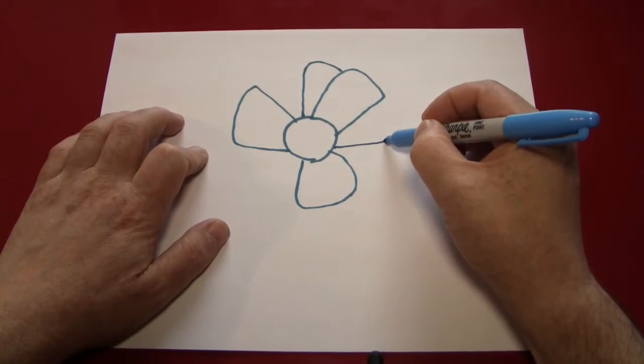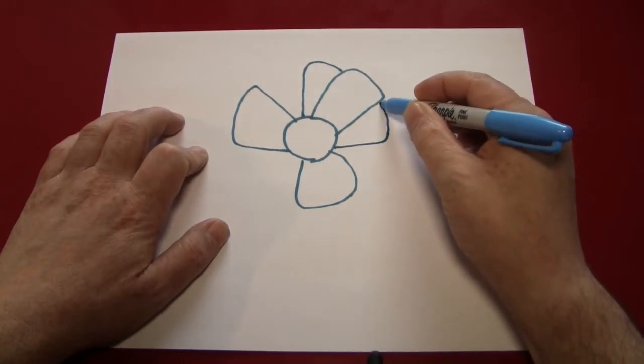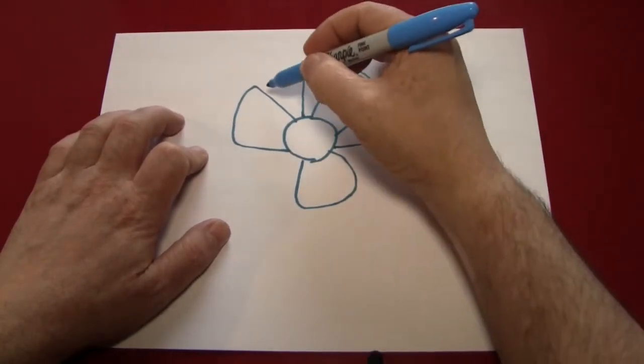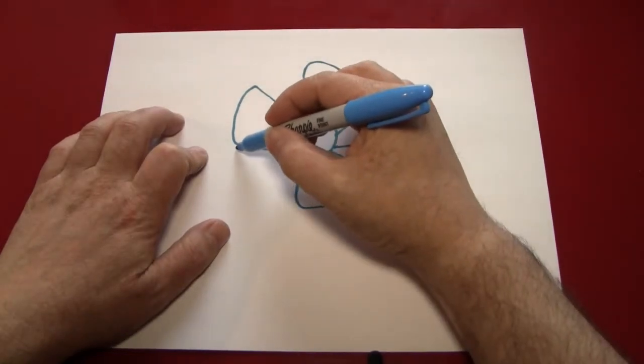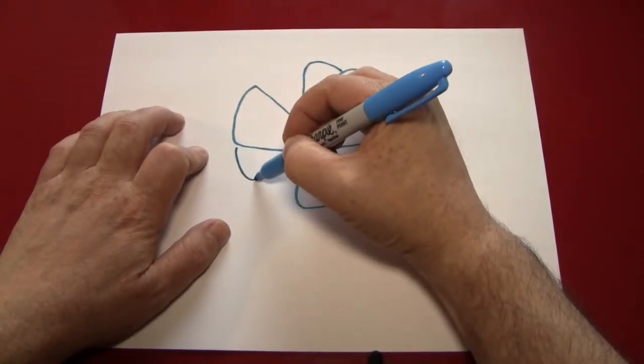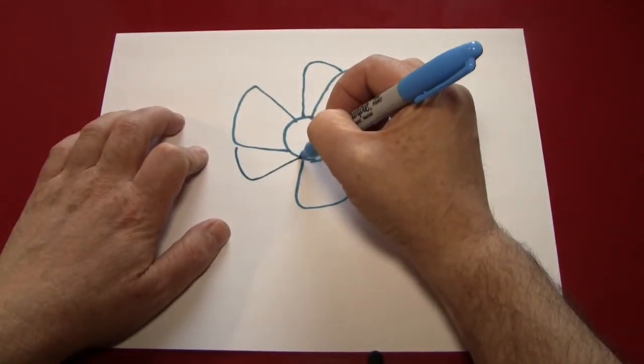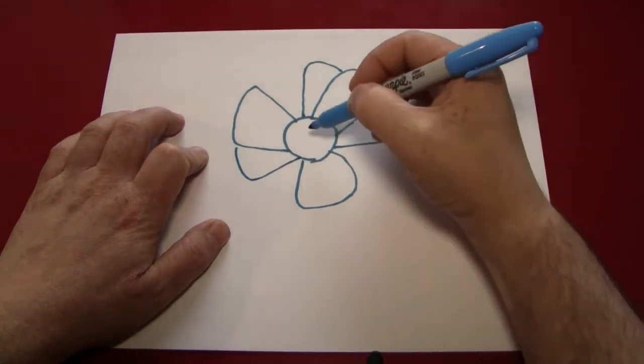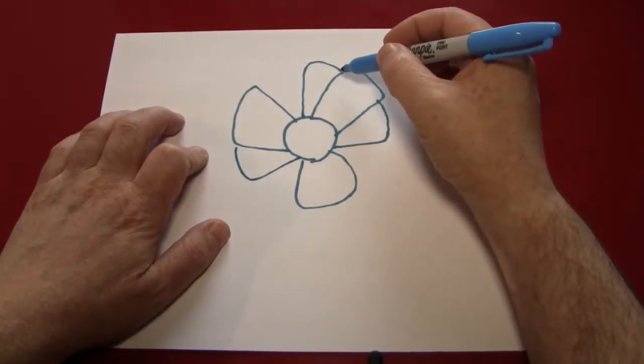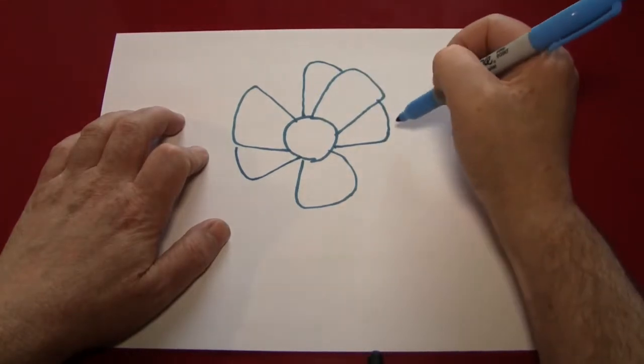You can do it on either side, left or right, and it doesn't have to be a half. It can be three quarters or nine tenths of a petal. The idea is that you draw the petal up and over and let it get cut off by one of the front petals.